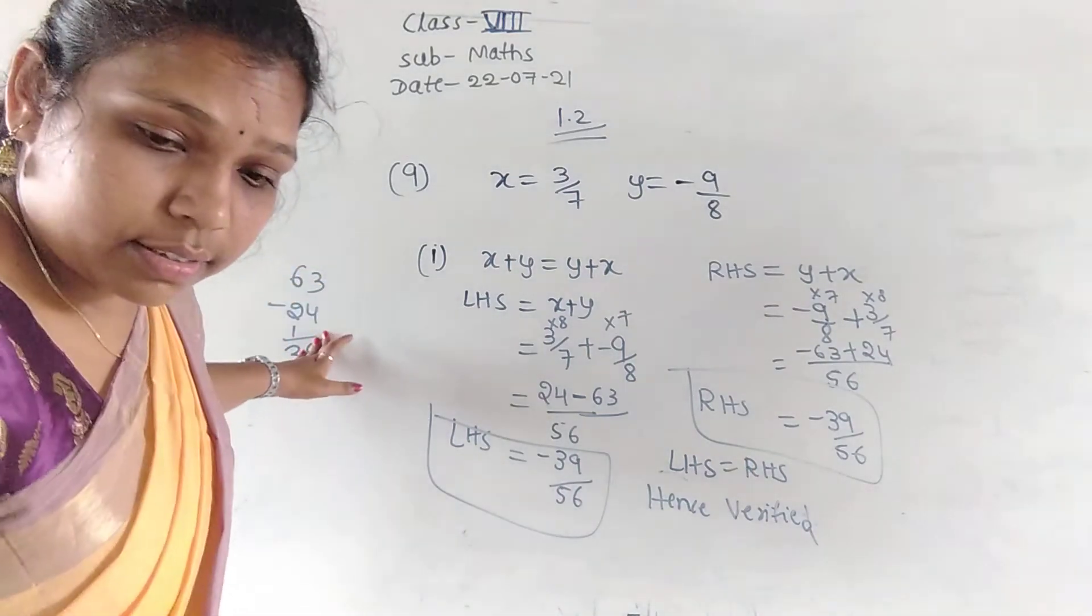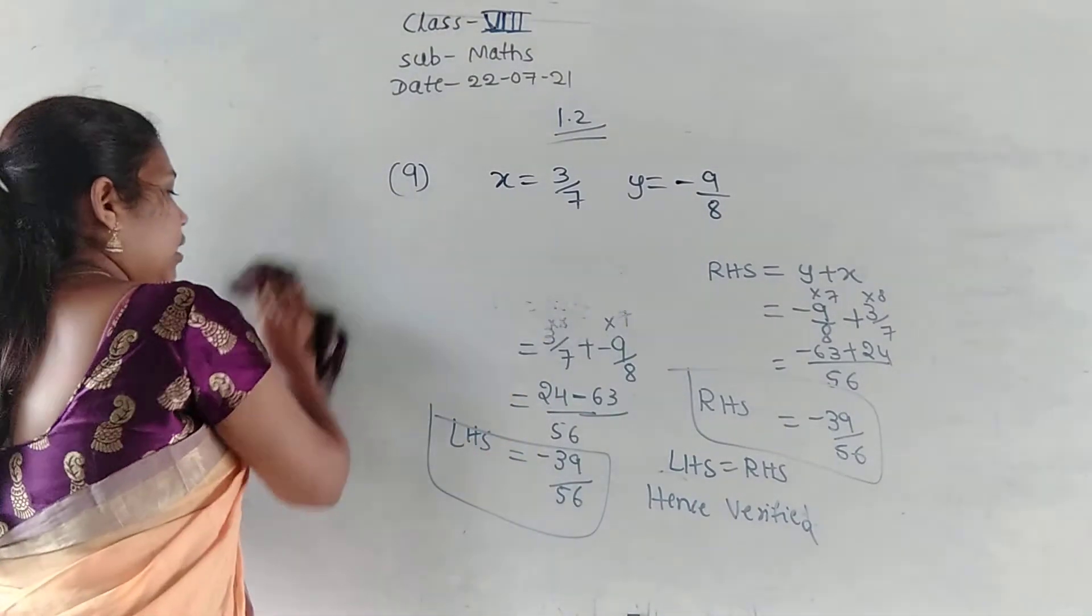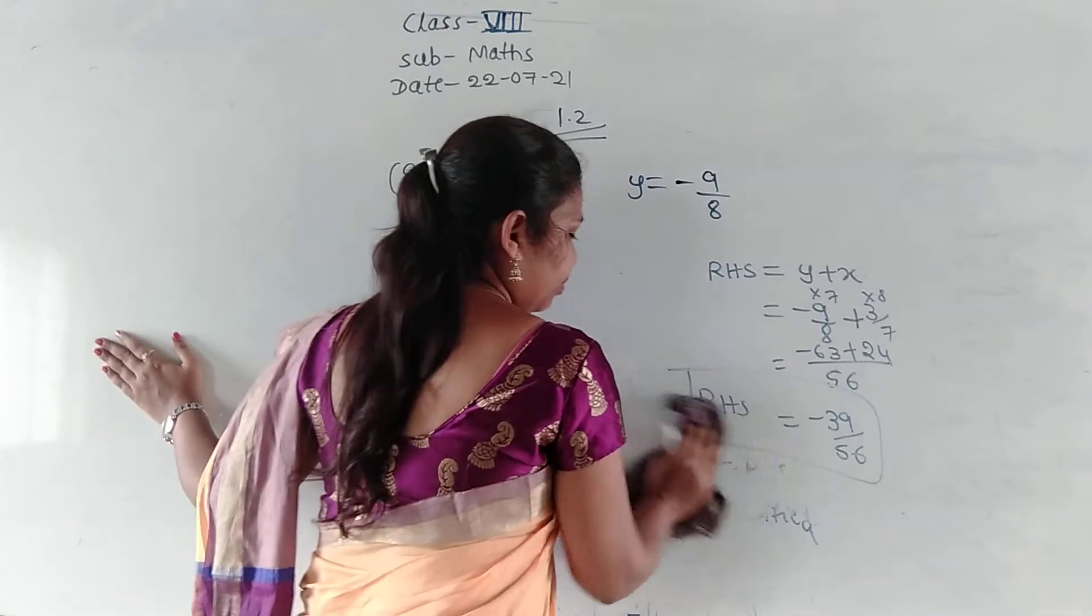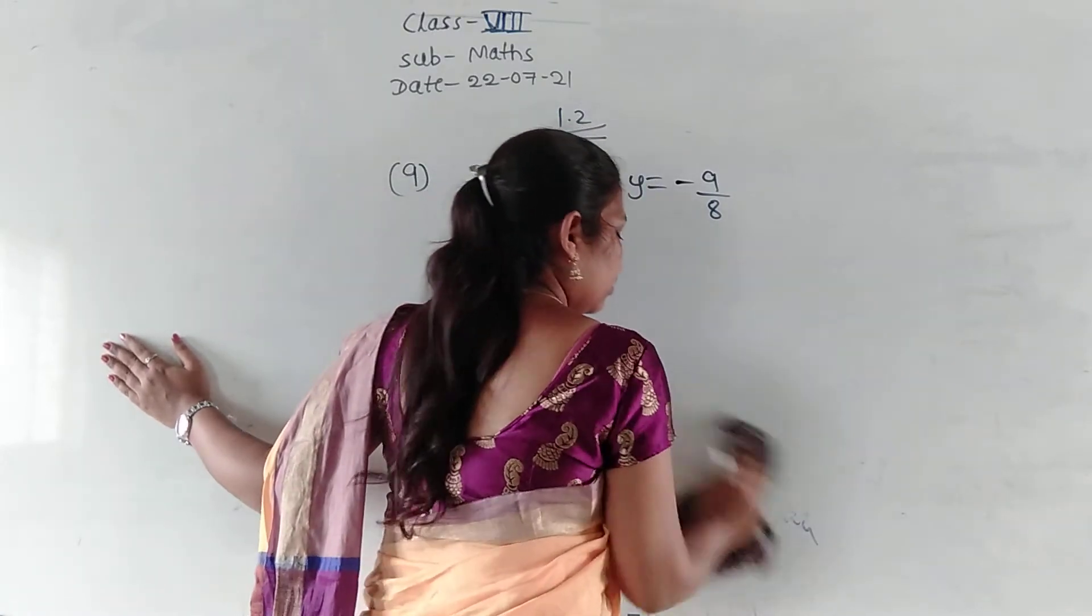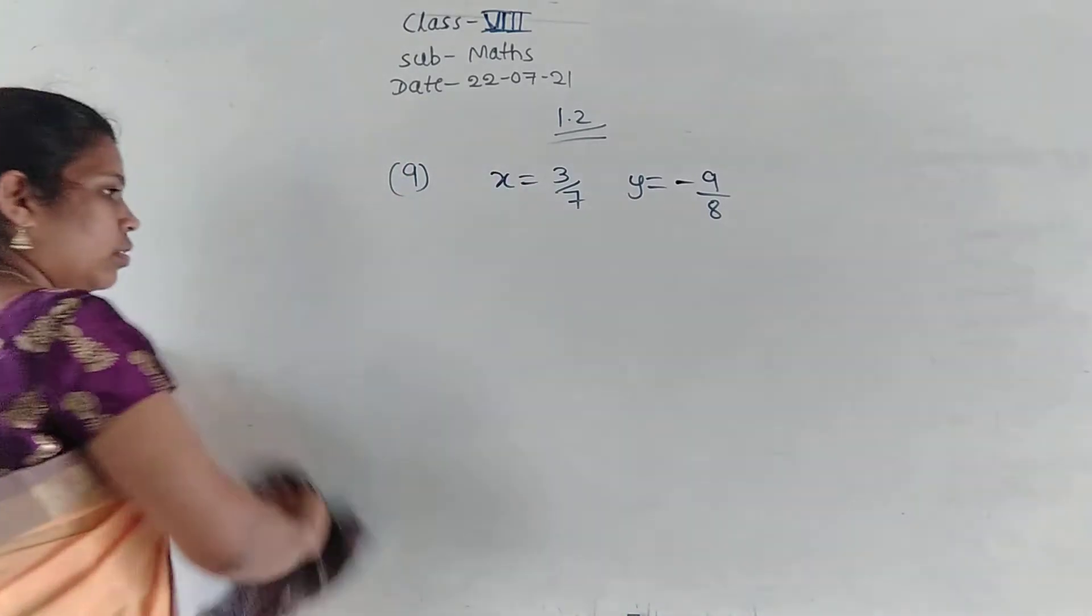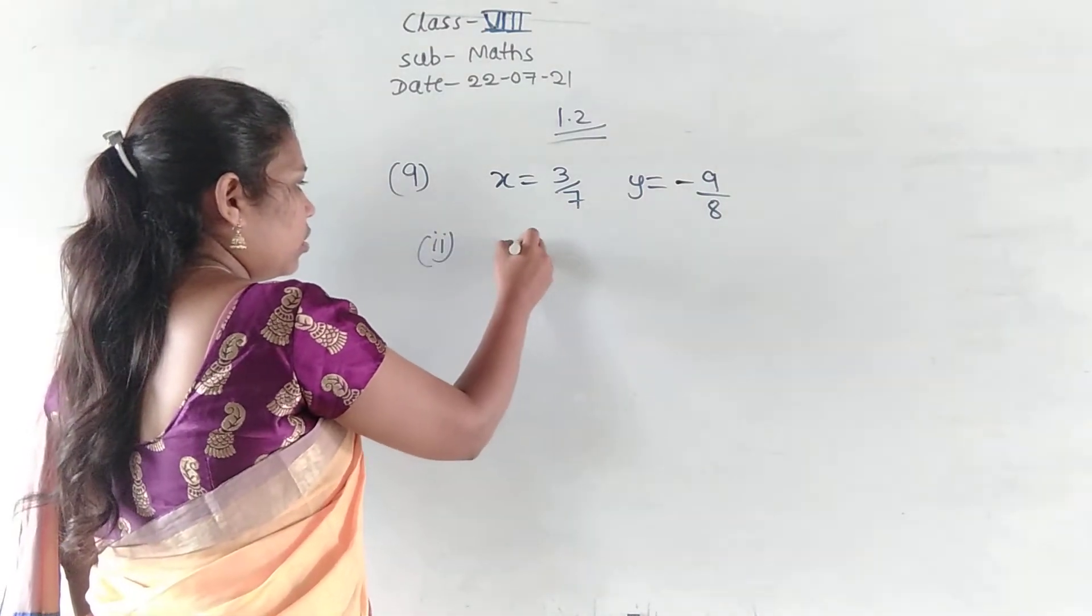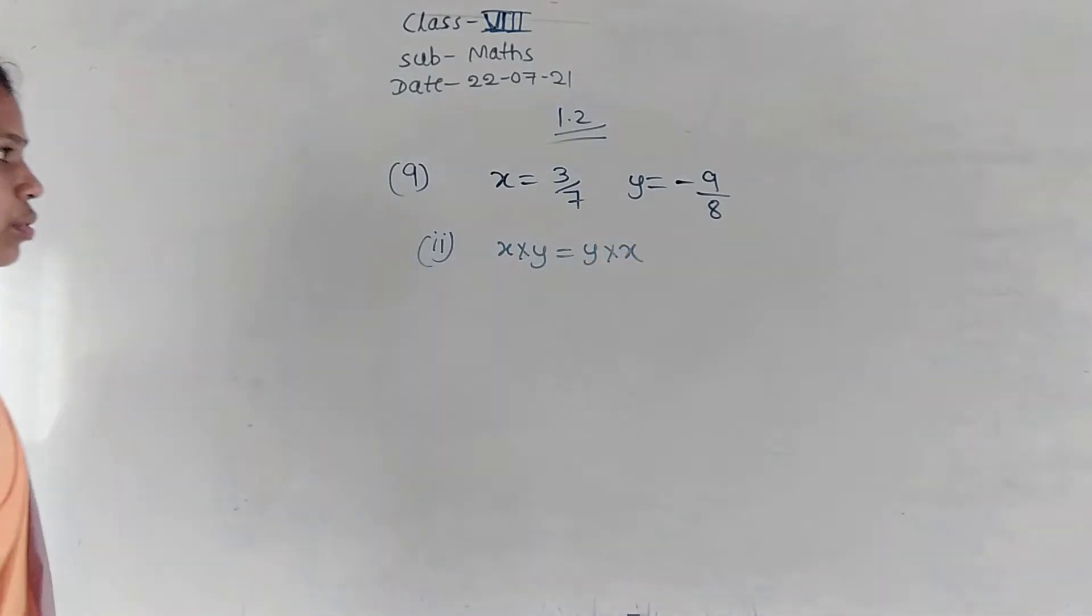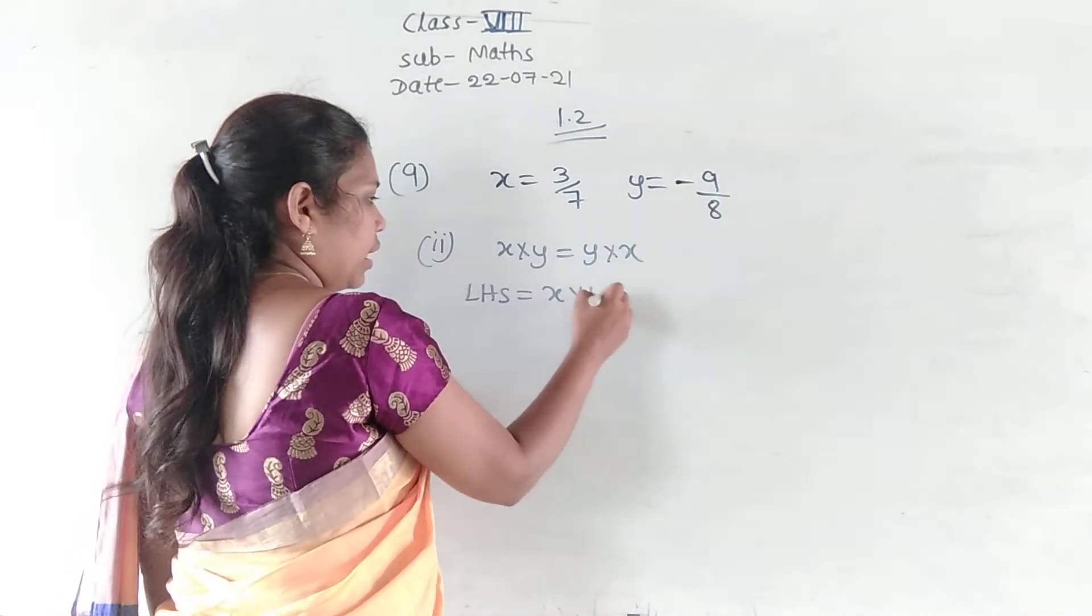So, now we will go with the second one. X into Y is equal to Y into X. That is also commutative property under multiplication. Second one, X into Y is equal to Y into X.